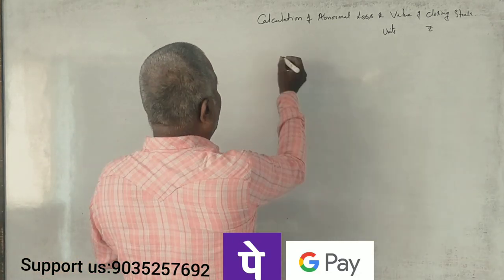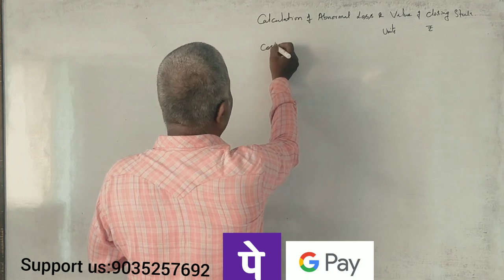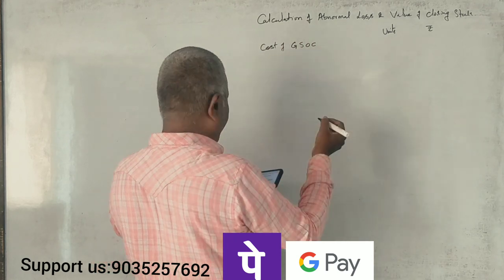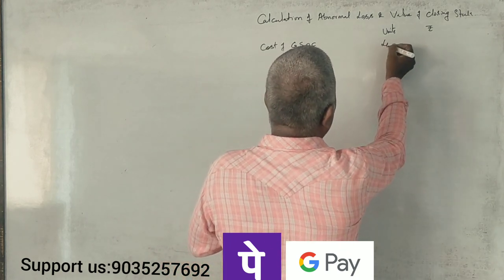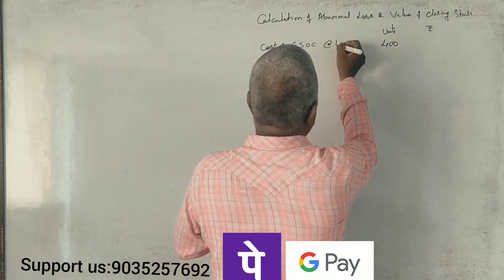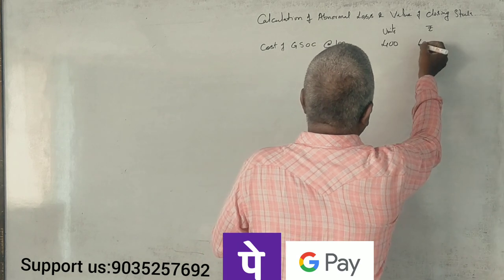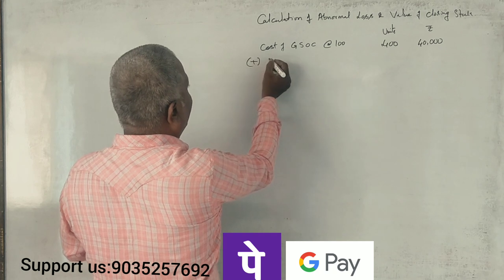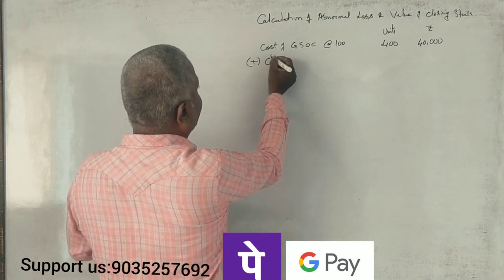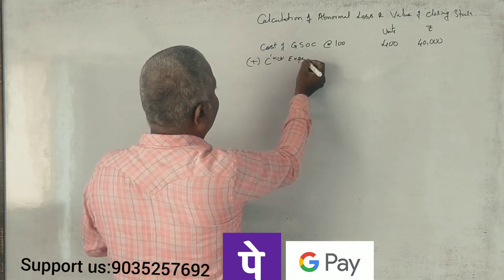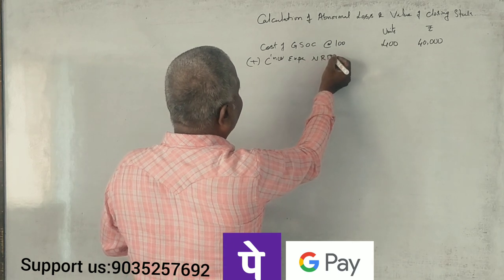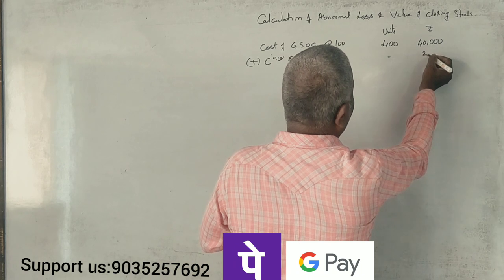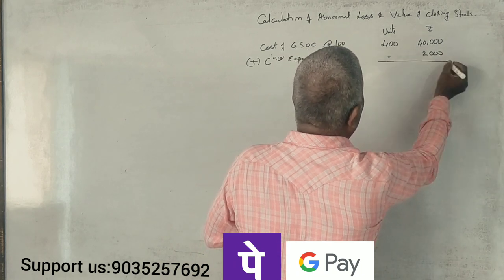First, cost of goods sent on consignment: 400 units at ₹100 per unit equals ₹40,000. Consignor expenses — non-recurring expenses — are ₹2,000.